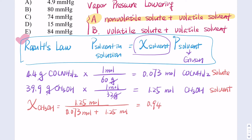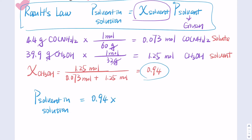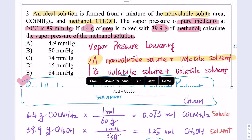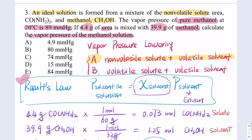Now we can finish the calculation using Raoult's Law. The vapor pressure of the solvent in the solution equals the mole fraction, which we just calculated as 0.94, times the pure solvent vapor pressure — which is given in the question as 89 mmHg. After the calculation, you get about 84 mmHg, so you would choose answer choice E.